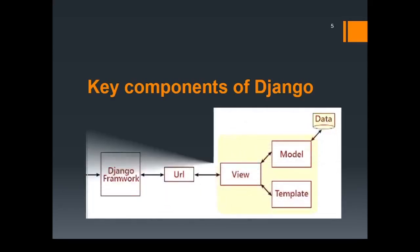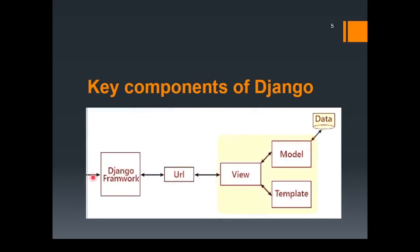Consider this example where a user is trying to interact with the Django framework. Let's say the user is requesting for a resource. For this purpose, we have a URL dispatcher within the Django framework. If the URL maps to whatever is being requested by the user, a view is called, which further interacts with the model and the template. As a result, the Django framework responds back to the user and shows the template — which is an HTML file — to the user. You also have a model here which interacts with the data and simplifies the interaction with the database.